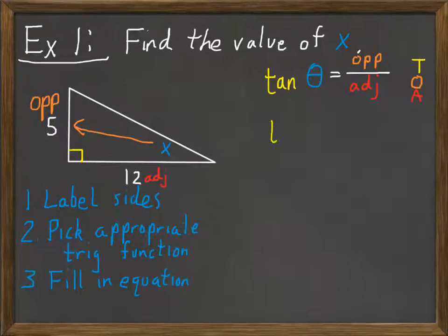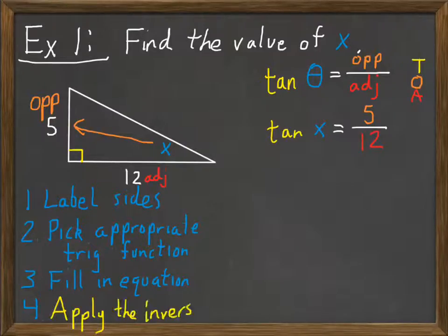Third step, fill in the equation. It's all still the same. My angle is x, so instead of theta, I'll write x. The opposite is 5, and the adjacent is 12. So I have tangent of x equals 5 over 12. Here's where it changes. The fourth step is different.